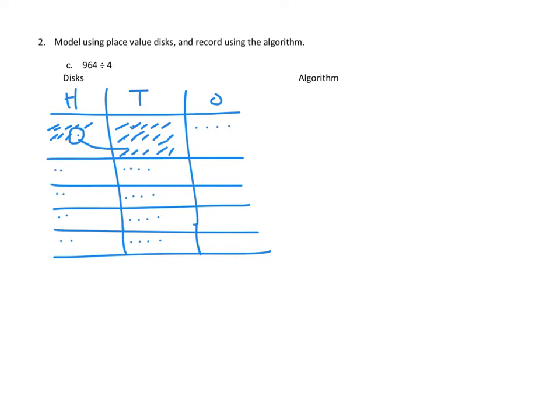And we can move on to our ones, where we have a very simple problem. We have 4 ones that need to be divided into 4 groups, giving us 1 one in each group. At the end of the day, when we look at each of our groups, we have 2 hundreds, 4 tens, and 1 one, or 241 in each of those groups.